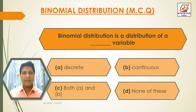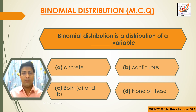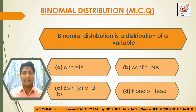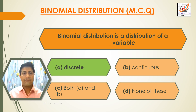Next question: Binomial distribution is a distribution of a dash variable. Option A: Discrete. Option B: Continuous. Option C: Both A and B. Option D: None of these. The answer is option A — Discrete. Binomial distribution is a distribution of a discrete variable.